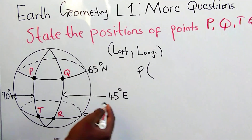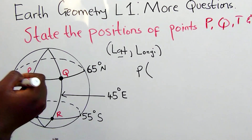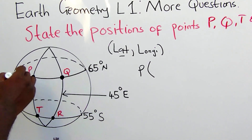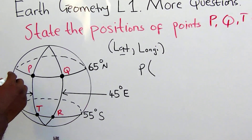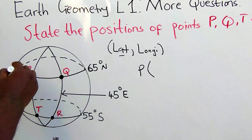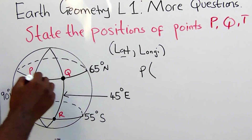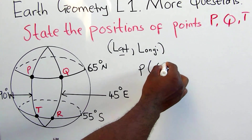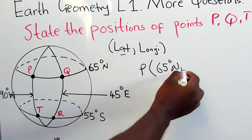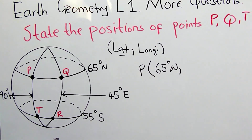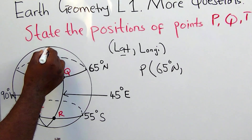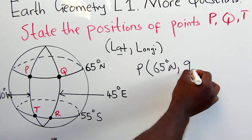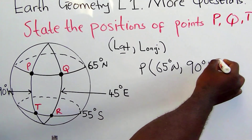To state the position of point P, we first look at the latitude. Latitude lines run from west to east. Point P and Q are lying on the same latitude, which is 65 degrees North. The longitude for point P is 90 degrees West. So the position of point P is (65°N, 90°W).